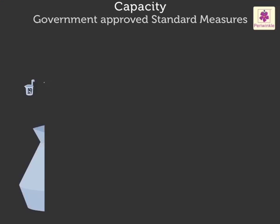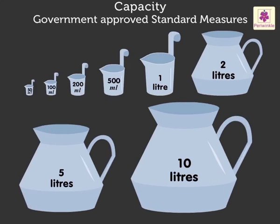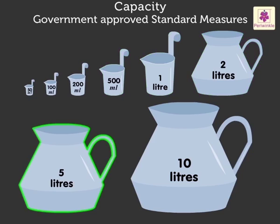There are certain standard measures used to measure the capacity of a liquid. They are approved by the government: 50 milliliters, 100 milliliters, 200 milliliters, 500 milliliters, 1 liter, 2 liters, 5 liters, and 10 liters.